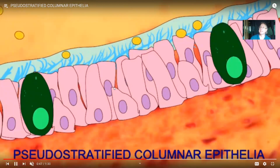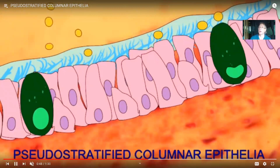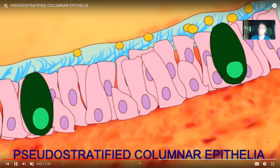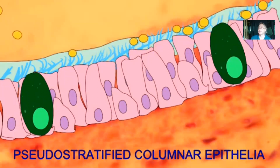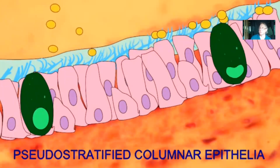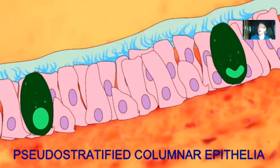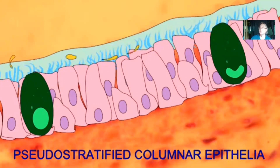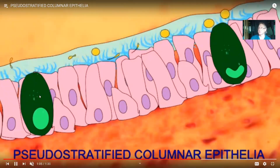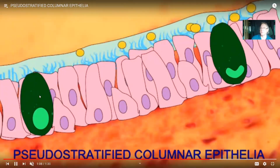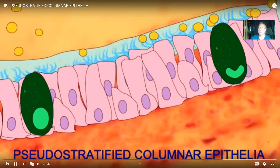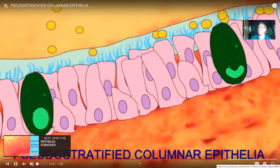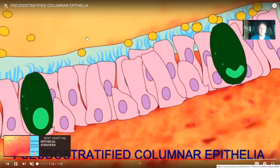The cilia on the pseudostratified columnar epithelia can sweep mucus. When inhaling, you might inhale dust, diesel particles, or germs. You don't want these reaching the delicate simple squamous tissue of the lung. The mucus released by goblet cells traps foreign particles, and the cilia on the pseudostratified columnar epithelia sweep it away from the lungs.